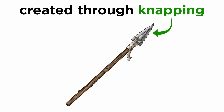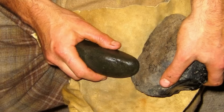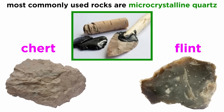The process of creating a point is called napping. Not just any rock can be napped — in fact, the vast majority of rock types don't meet the important criteria. Most importantly, a rock must be able to easily break in predictable ways when a force is applied. The rock also must be hard enough to withstand being used as a point, instead of breaking before it's able to lodge itself into a target. By far the most common rocks used in napping contain microcrystalline quartz, namely chert and flint.